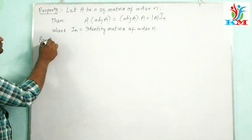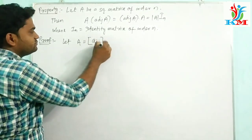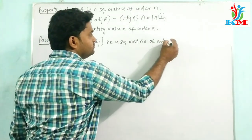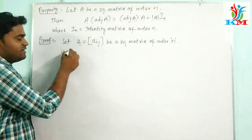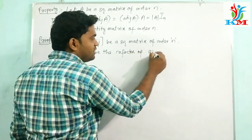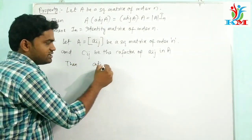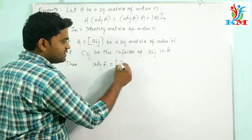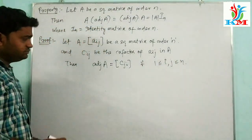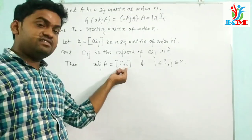Let's see the proof. Let A equal to Aij be a square matrix of order N. As per the definition, adjoint of A is equal to the matrix Cji for all 1 ≤ i, j ≤ N. We already discussed that adjoint of A is the transpose of the co-factor matrix Cij, that means Cji.